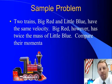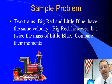In our sample problem, two trains, Big Red and Little Blue, have the same velocity, but Big Red has twice the mass of Little Blue. What can you say about their momentum?